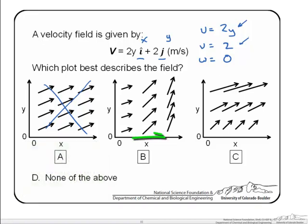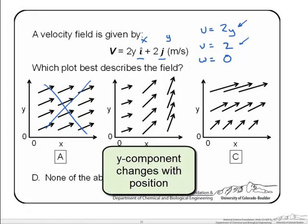Looking at option B we see as we increase along the x axis initially the velocity starts to increase in both the x and y components. And then eventually it looks like the x component decreases and the y component increases. Because the y component is increasing in the x direction we can cross out option B.